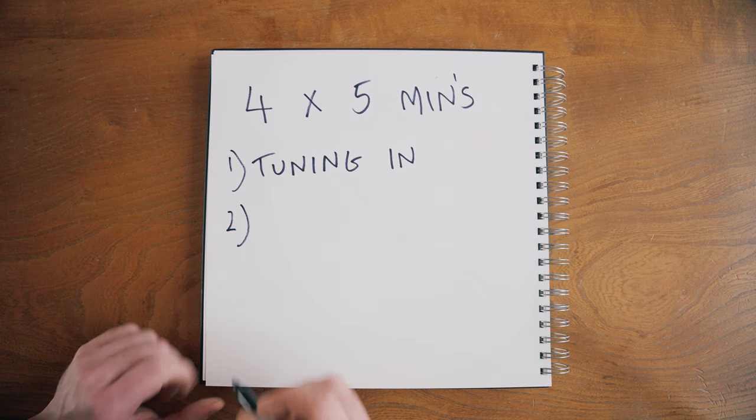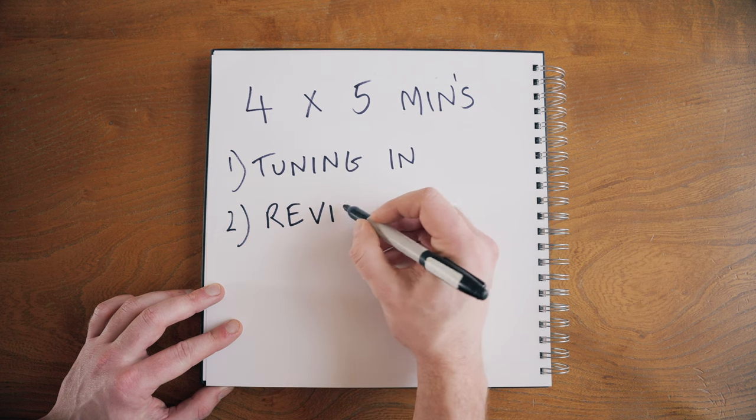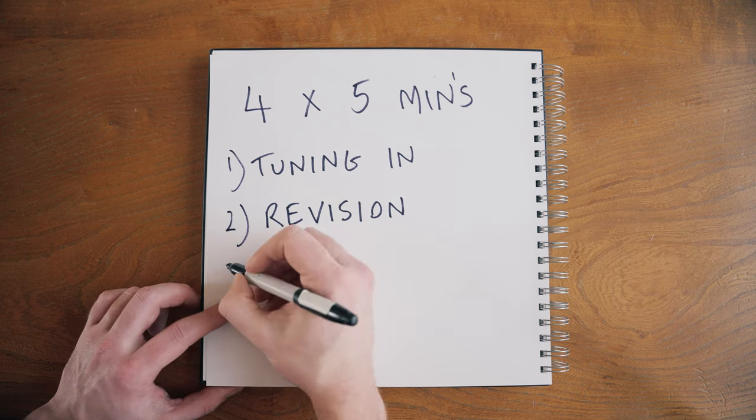The second part of the practice session is revision — revisiting what you did the last time you played. Maybe it's a piece of repertoire you've been working on, or something familiar like your favorite tune. You might be working on a particular technical thing like a long roll on the snare drum or a finger-picking pattern on the guitar. Make sure it's mindful repetition, not mindless repetition.